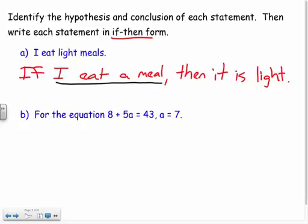If I eat a meal, so I eat a meal, that's my hypothesis. I'll just put my H there for hypothesis. Then it is light. It is light is my conclusion. So if I eat a meal, my conclusion is it's going to be light based on that statement.